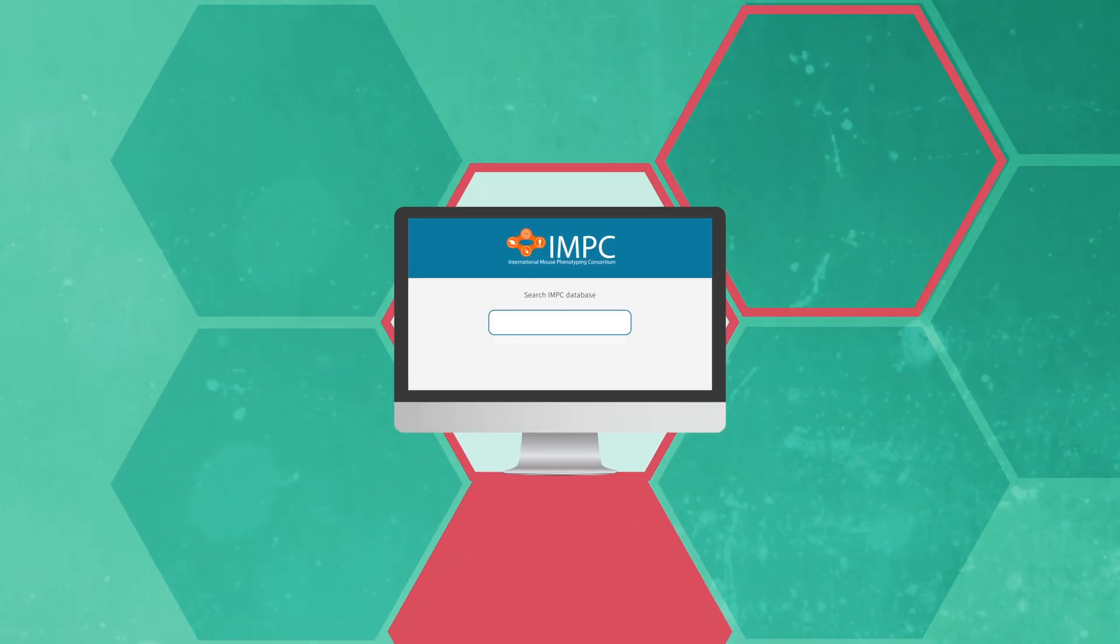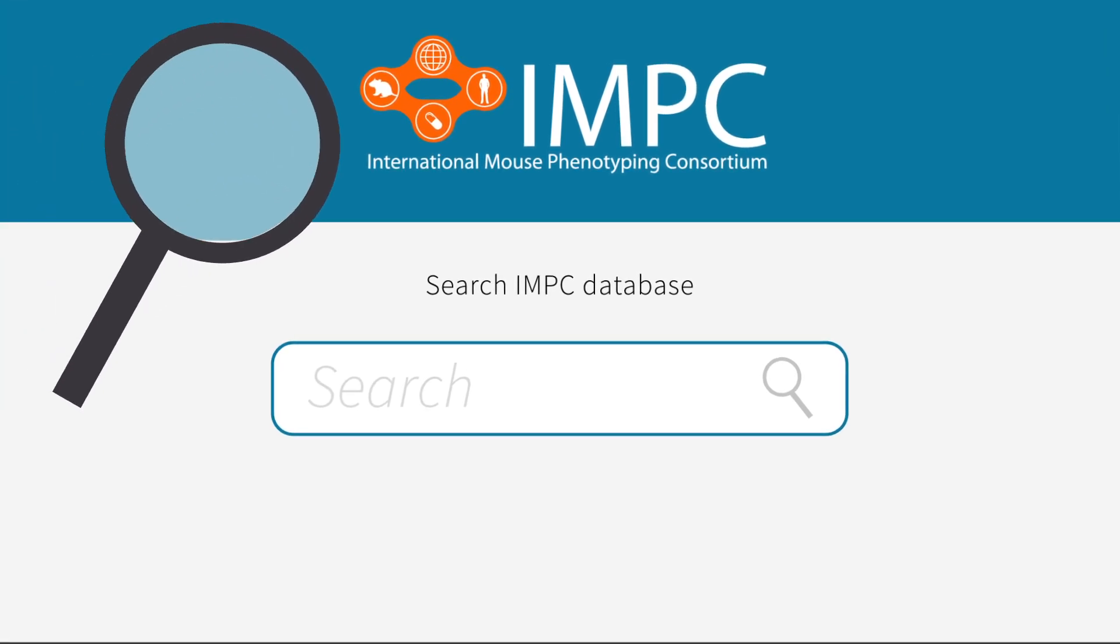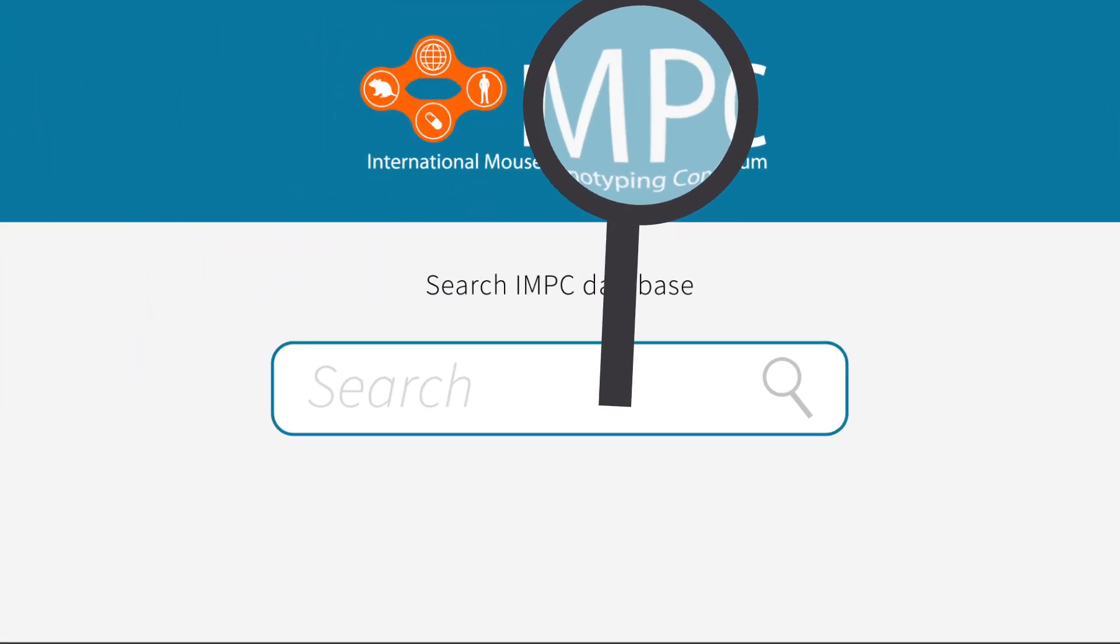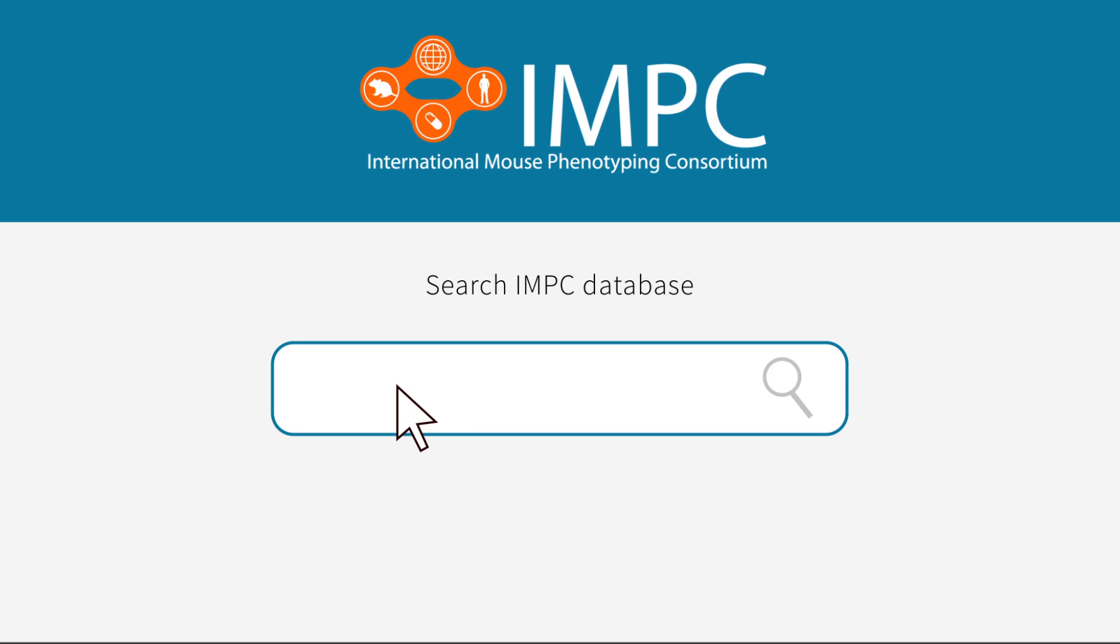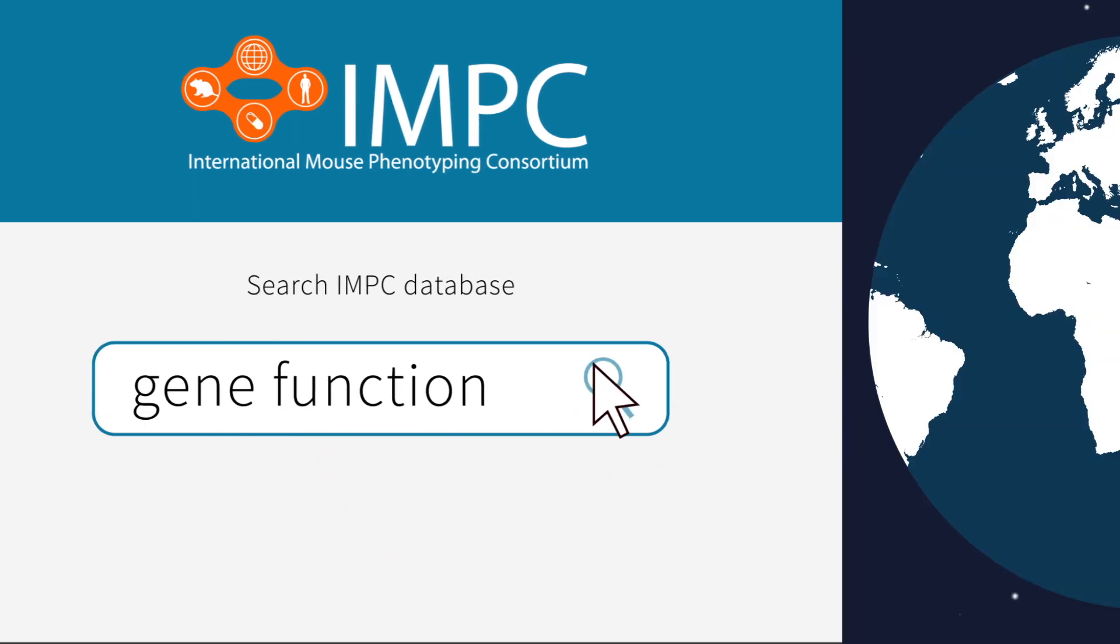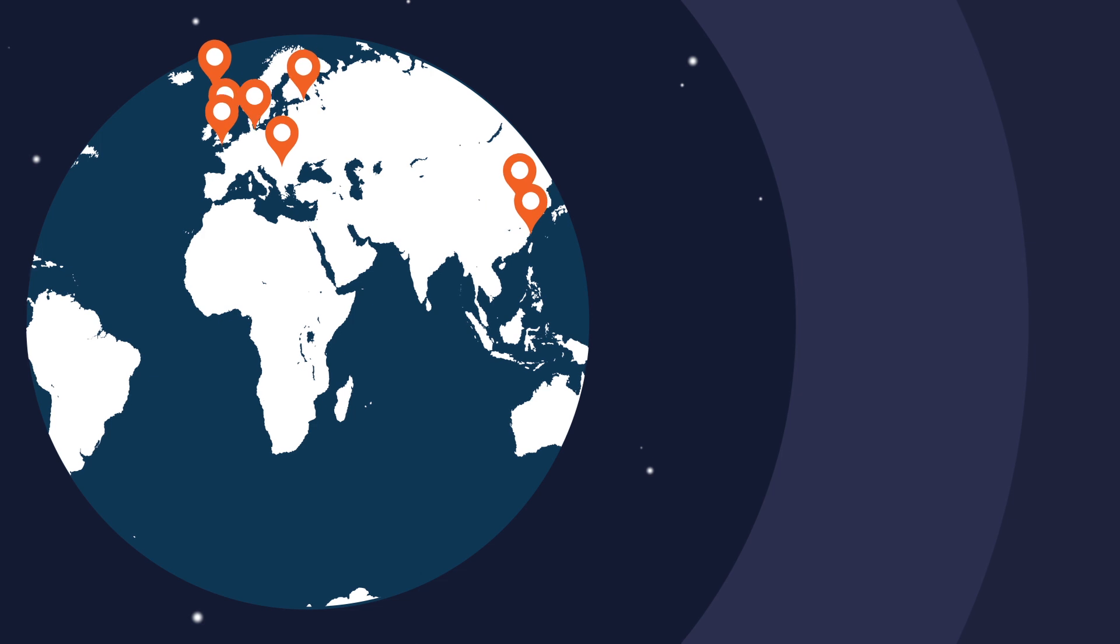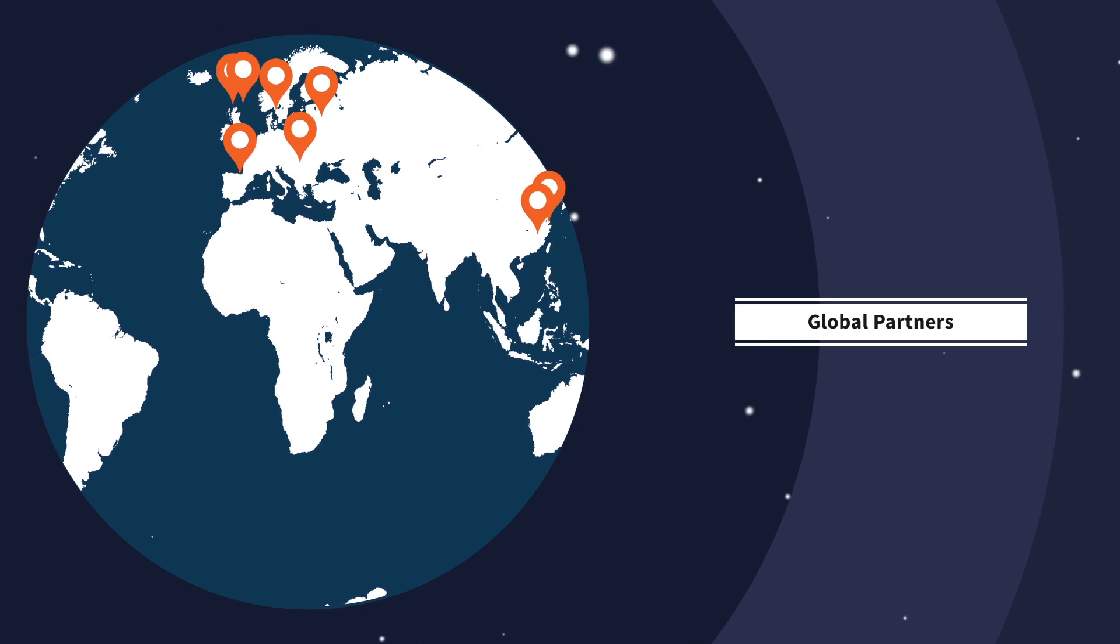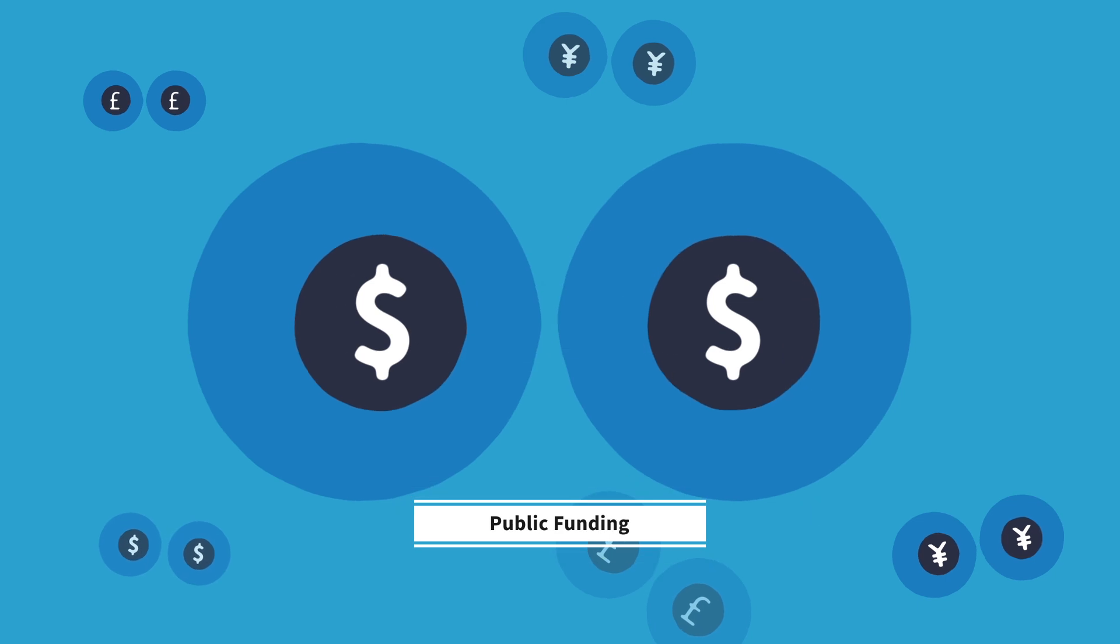Fortunately, Maria can turn to the International Mouse Phenotyping Consortium, the IMPC, to find freely available information on what is known about the function of a gene. The IMPC is a global network of leading scientific institutes and is supported by public funding to help make research more efficient.